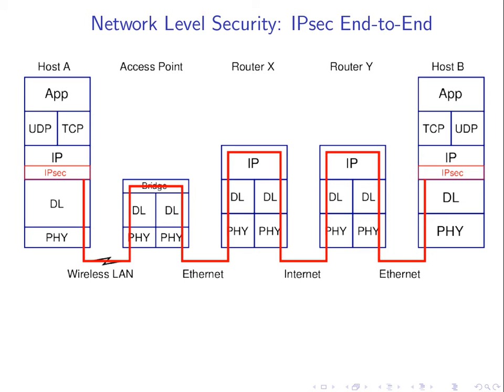At the network layer there's IPsec, which can also provide end-to-end encryption. It encrypts everything — whether it's UDP or TCP, whatever transport protocol is being used, the data is sent to IP and then IPsec encrypts it. So it doesn't matter which transport protocol or application layer protocol we're using — HTTP, email, instant messaging — it can all be encrypted with IPsec.